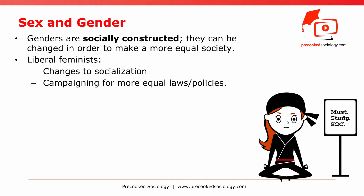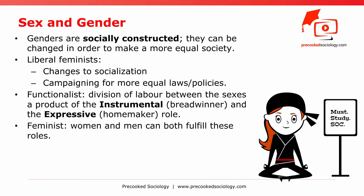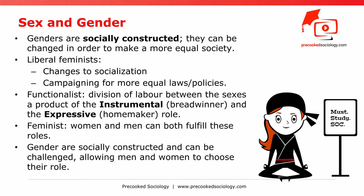Liberal feminism is in opposition to the functionalist theory, which sees the division of labor between the sexes as being a product of the instrumental breadwinner role and the expressive homemaker role. For a feminist, both women and men are equally able to fulfill these roles. As we mentioned before, because they are socially constructed, they can be challenged, allowing men and women to choose their role rather than having it thrust upon them by society.